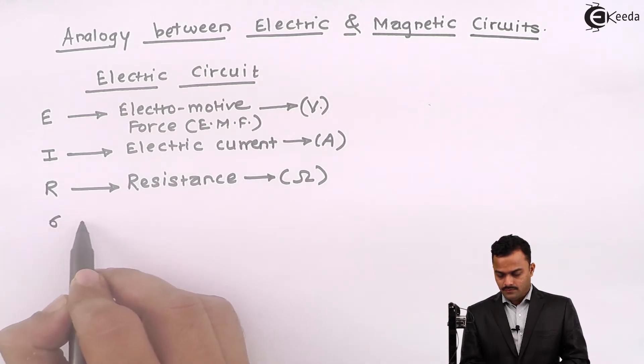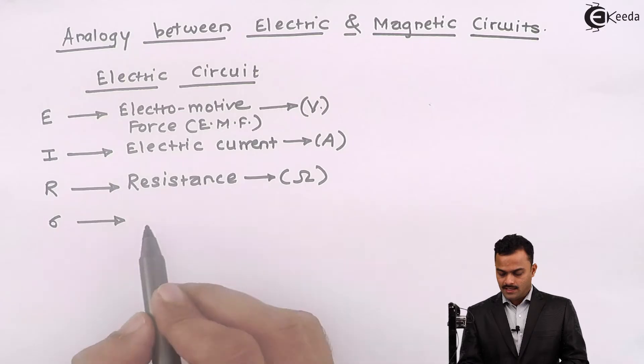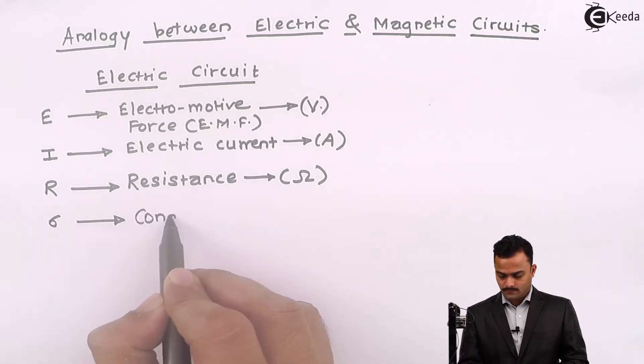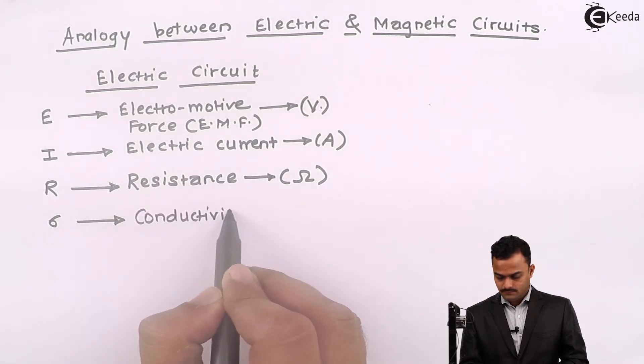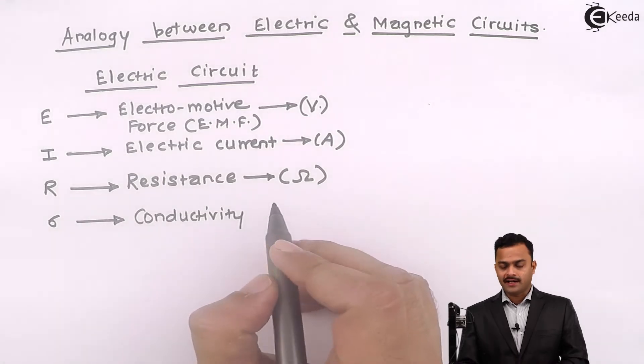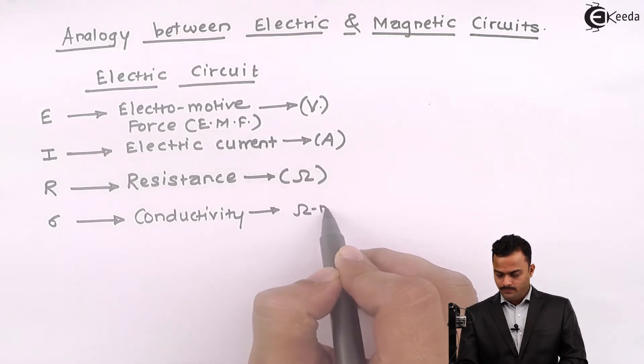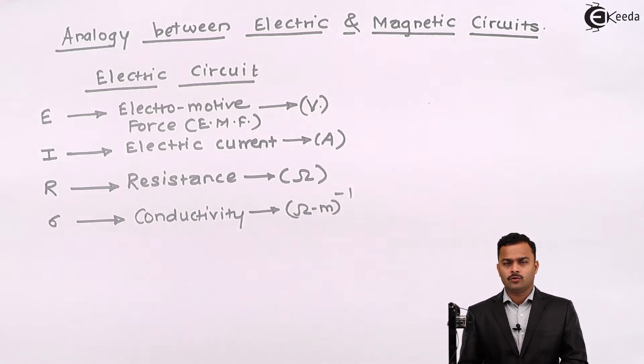Then we have property of material which we call as a sigma and it is a conductivity. So it is a property of material which will tell us how much current it can take. And the unit is Ohm meter inverse or you can say 1 upon Ohm meter.